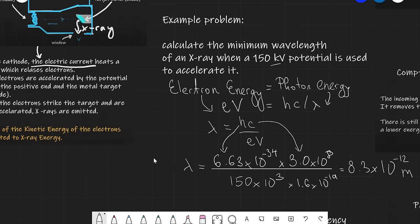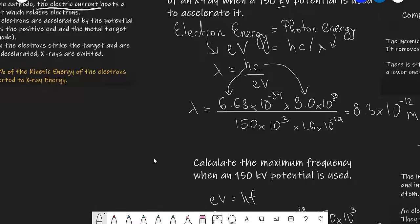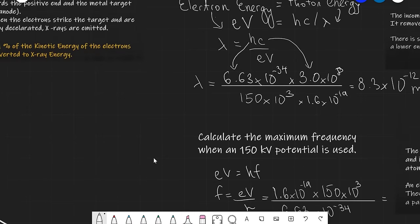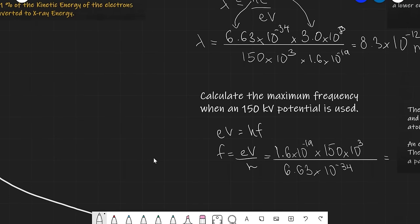A question can also ask for the maximum frequency. Calculate the maximum frequency when a 150 kV potential is used. In this case we set electron energy eV equal to hf, since that is another way of writing the energy of a photon. So frequency equals eV divided by h, which gives us about 3.6×10¹⁹ hertz.